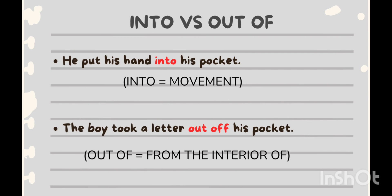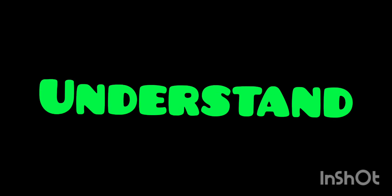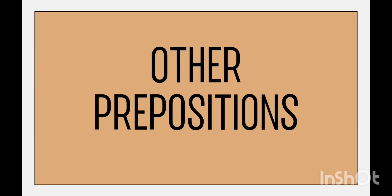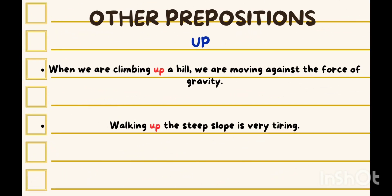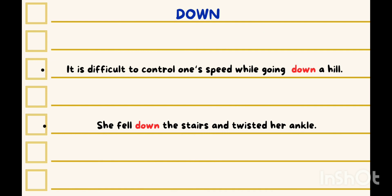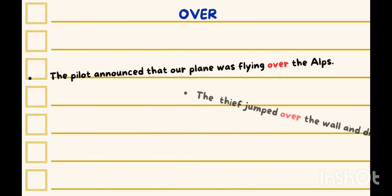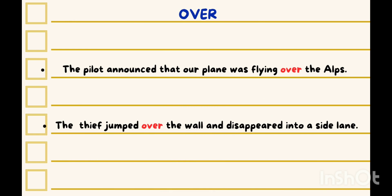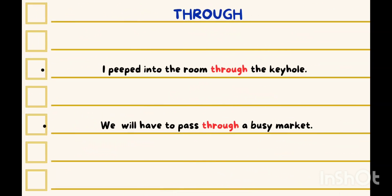Let's quickly understand the uses of other prepositions through sentences. Using 'up': 'When we are climbing up a hill, we are moving against the force of gravity,' or 'Walking up the steep slope was very tiring.' Using 'down': 'It is difficult to control one's speed while going down a hill,' or 'She fell down the stairs and twisted her ankle.' Using 'over': 'The pilot announced that the plane was flying over the Alps,' or 'The thief jumped over the wall and disappeared into a side lane.' Using 'through': 'I peeped into the room through the keyhole,' or 'We will have to pass through a busy market.'